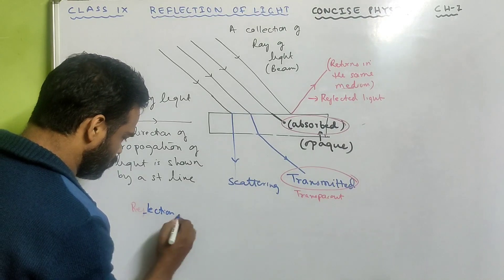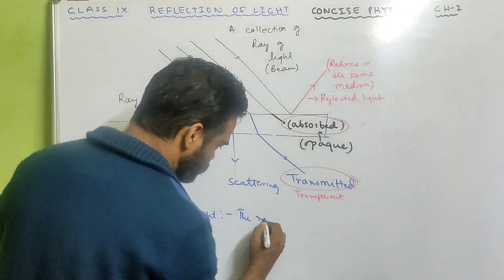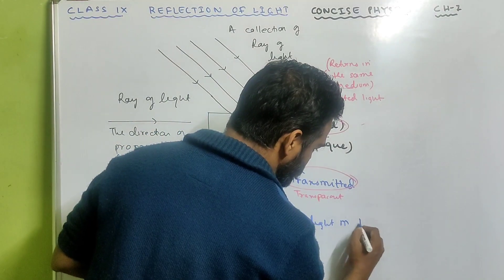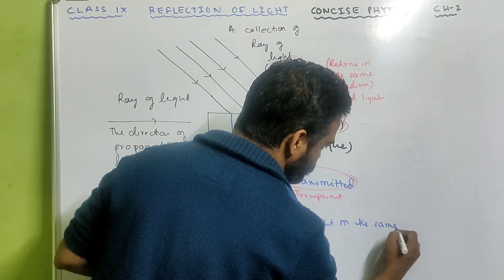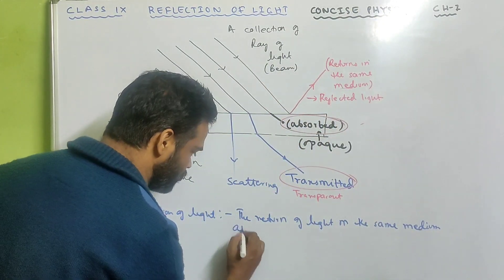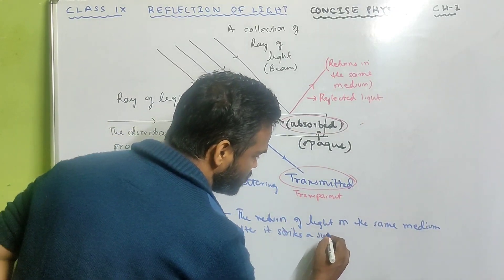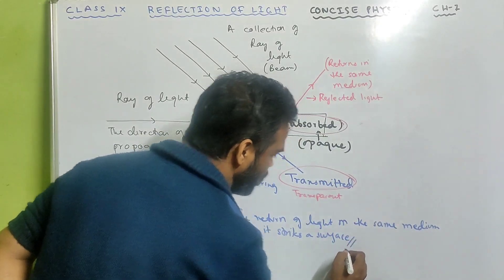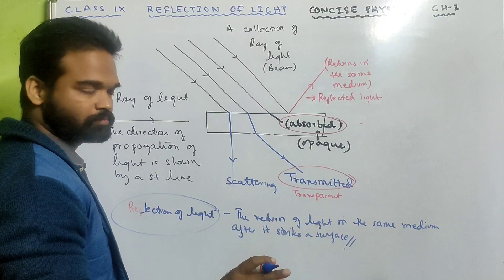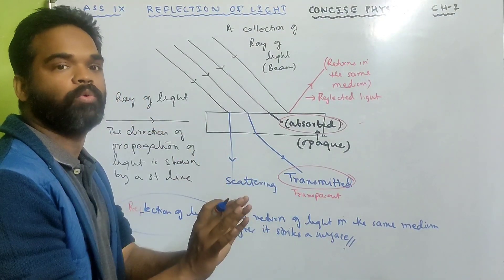From here we have the definition of reflection of light. Reflection of light is the return of light in the same medium after it strikes a surface. That is known as reflection of light.